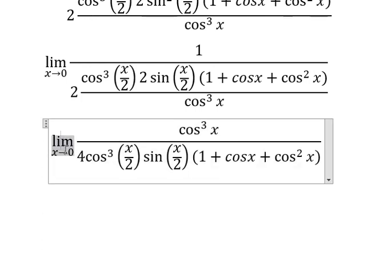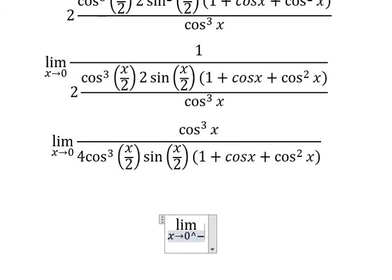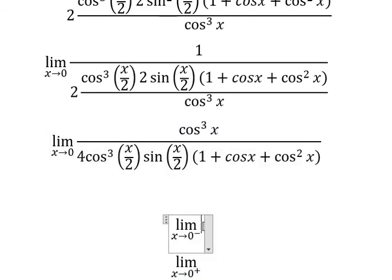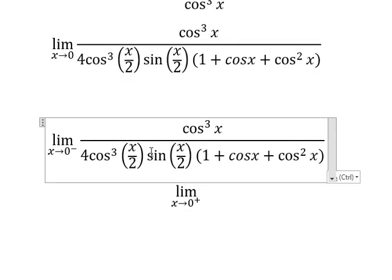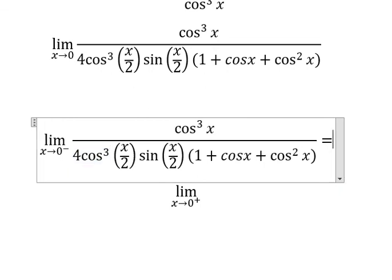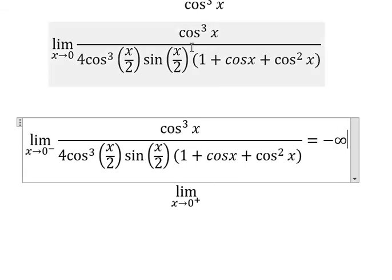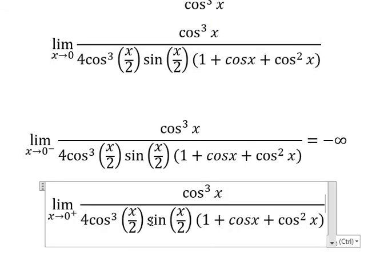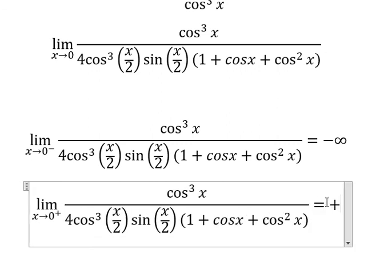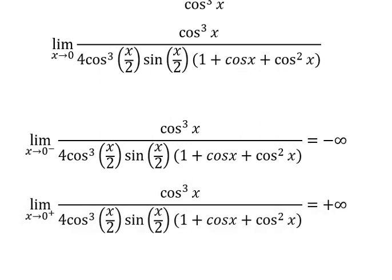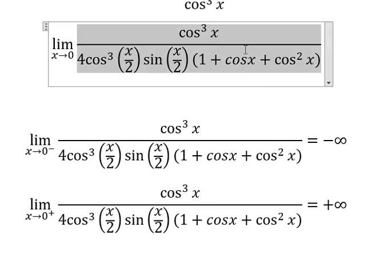So we need to consider the limit from the left and the limit from the right. On the left, this one is negative, while this one is positive, and positive — so 1 divided by negative gives negative infinity. On the right, sine of x over 2 is positive, so we have positive infinity. Therefore, the left and right limits are not equal, and the limit does not exist. That is the end — thank you for watching.